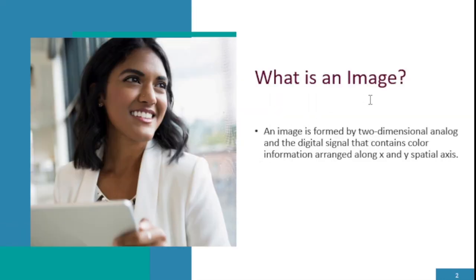So what is an image? An image is a visual representation of something. It consists of two dimensions, like a drawing, a painting, or a picture. These dimensions consist of analog and digital signals that also contain color information arranged along the X and Y axis.